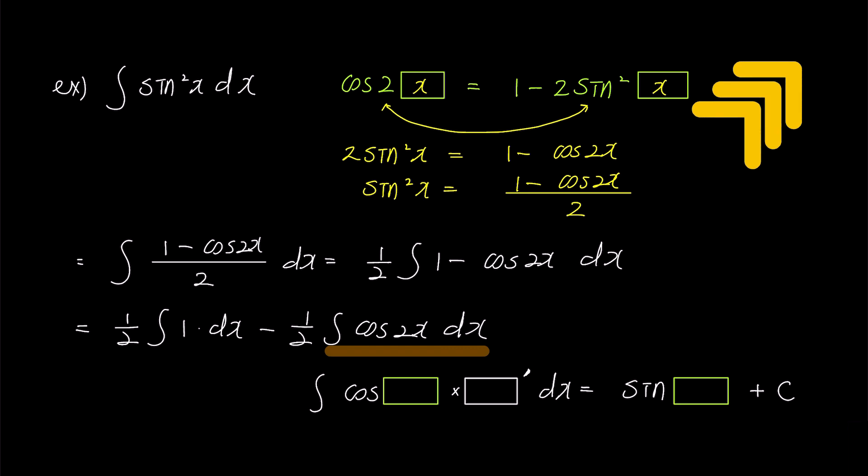We simply compare the formula with the problem and fill in the necessary values. We put 2x into the green box and the box next to it, the box prime, we put the derivative of this box, which is 2.